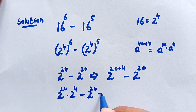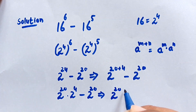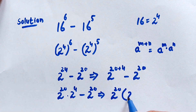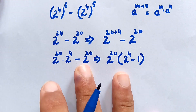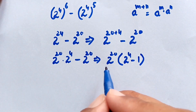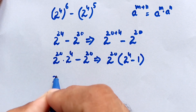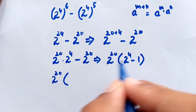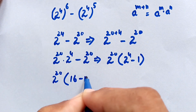Here we take 2 to the power of 20 as a common factor. This leaves 2 to the power of 4 minus 1 inside the bracket. So we have 2 to the power of 20 times 2 to the power of 4, which equals 16, minus 1.